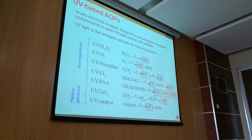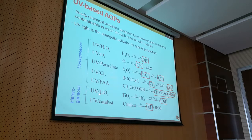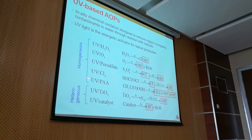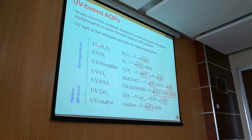The common types include UV-H2O2, UV-Ozone, UV-Persulfate, UV-Chlorine, UV-Peracetic Acid, UV-Titanium Dioxide, and UV-Catalyst systems that are not titanium dioxide — many new ones are being developed. The first five are homogeneous systems, while those involving a catalyst are heterogeneous systems. I'm going to focus on the homogeneous systems because in drinking water and municipal wastewater treatment, homogeneous systems are mostly used.